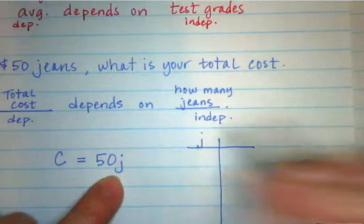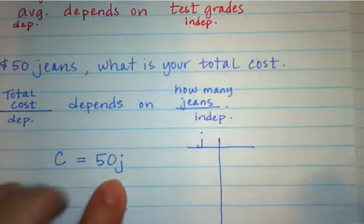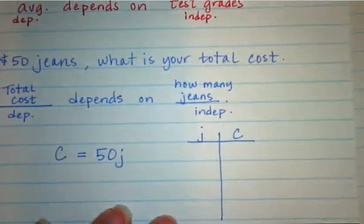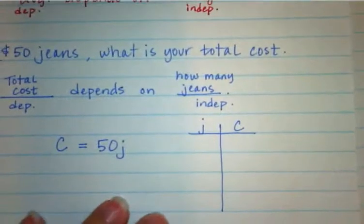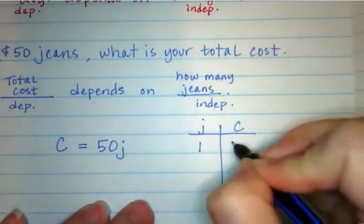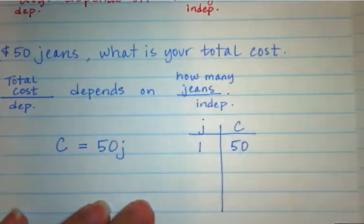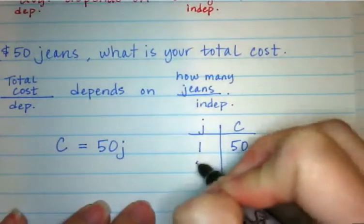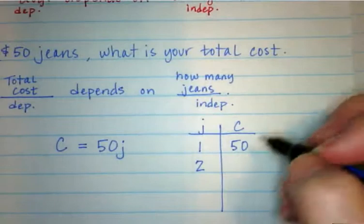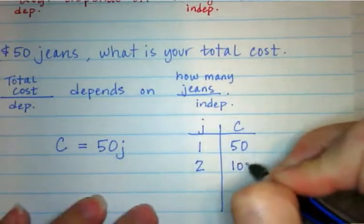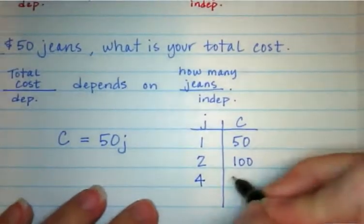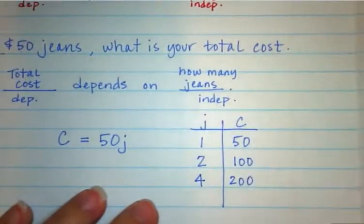Remember that the number of jeans you buy, that's your independent, so we're going to start with that, and then your cost is the dependent. So if we buy one pair of jeans, your cost is $50. If we buy two pairs of jeans, then your cost would be $100. If we bought four pairs of jeans, your cost would be $200.